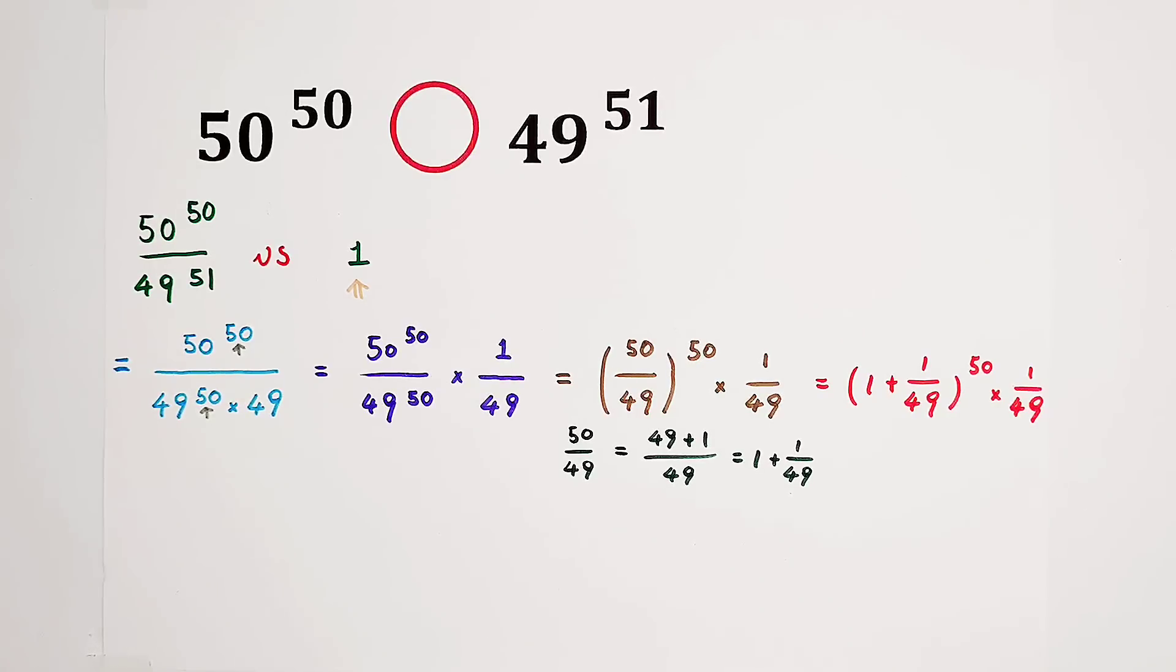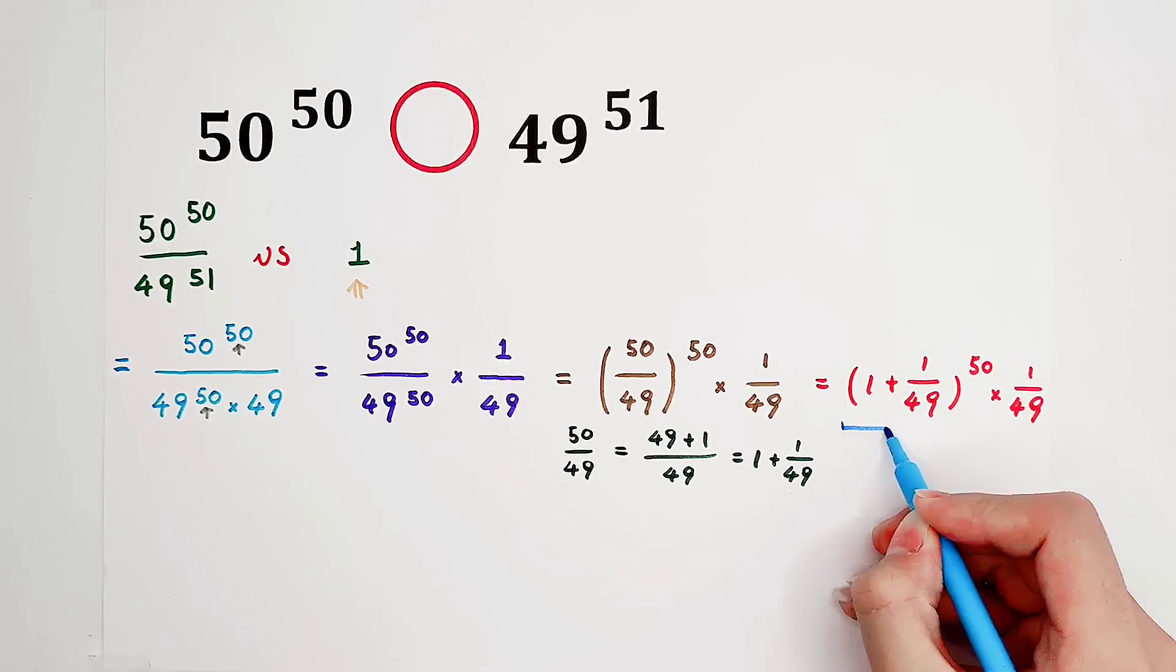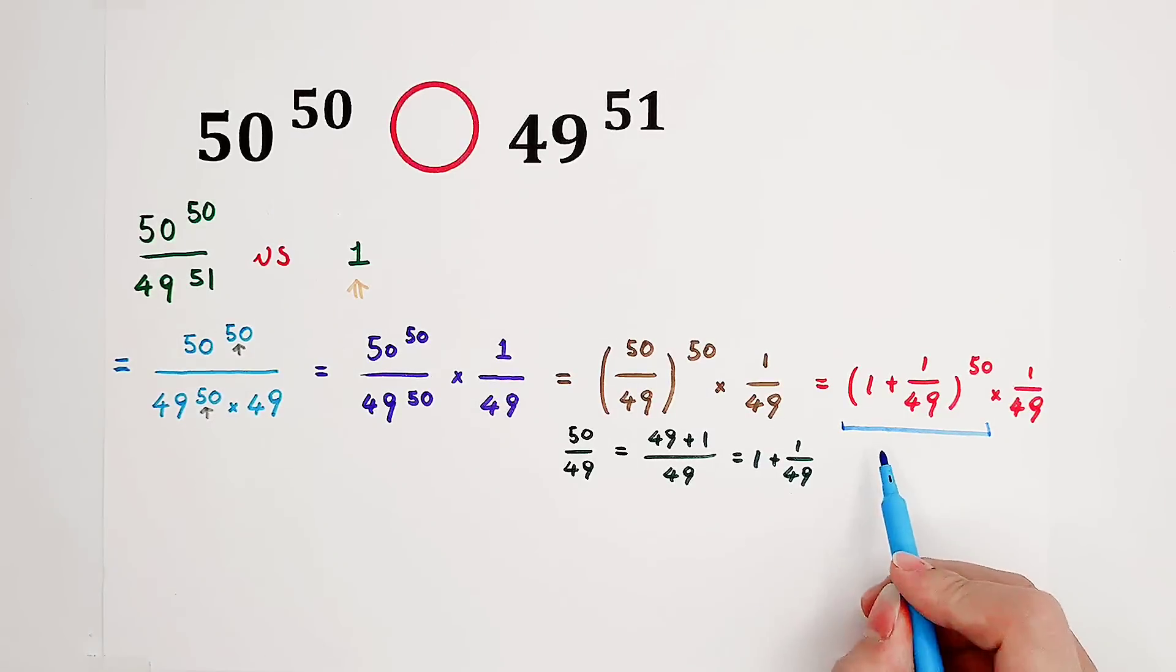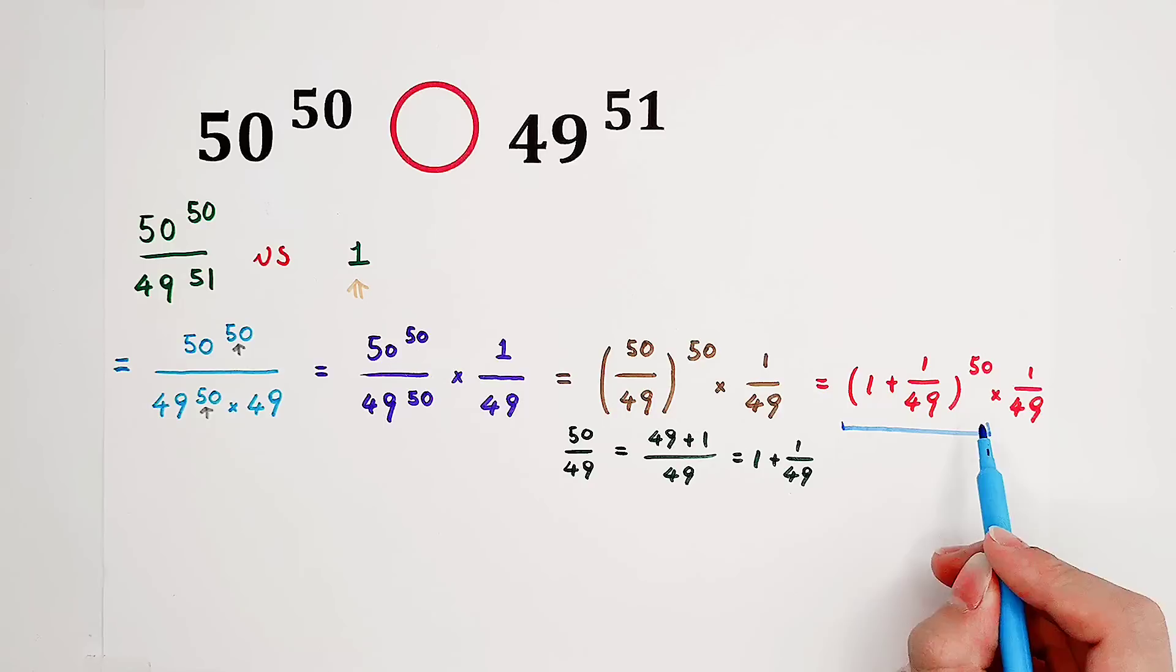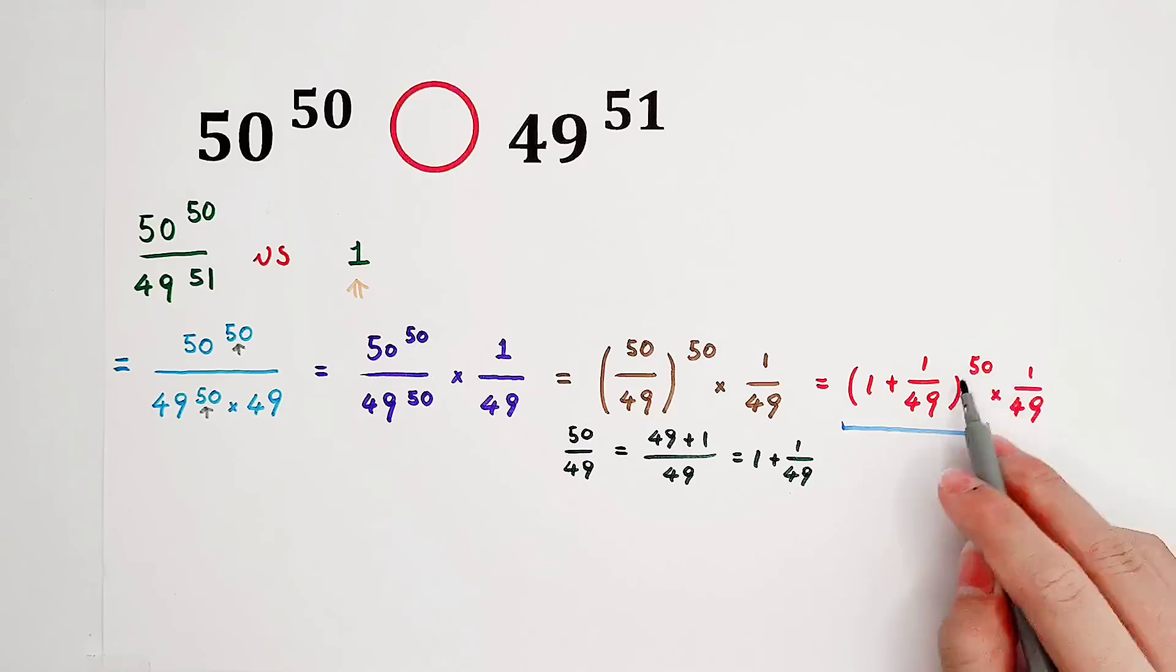1 plus 1 over 49, also to the power of 50. What is the problem? The base or the exponent? Maybe we want to say the base, because the base is so complicated. However, the answer is the exponent. The exponent 50 has a problem. A bad-looking term.